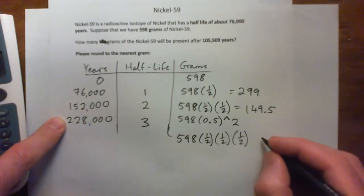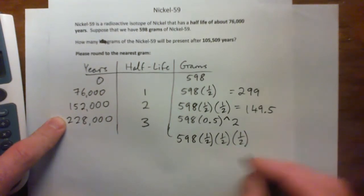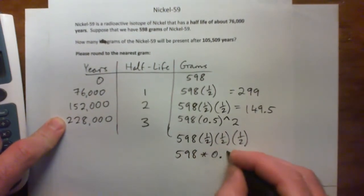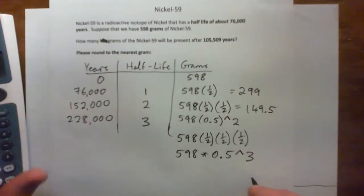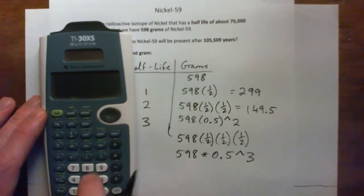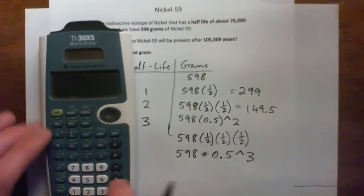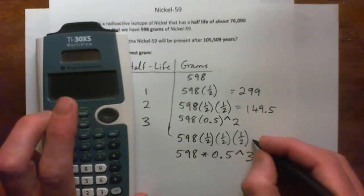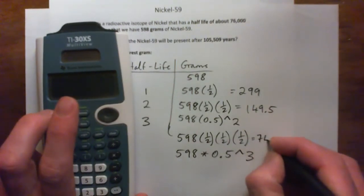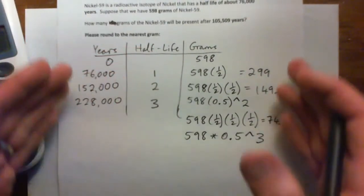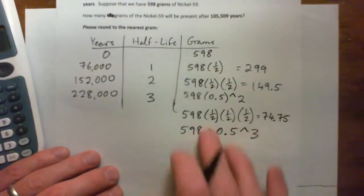So that's 598 times a half cubed, or 598 times 0.5 to the power of 3. So 598 times 0.5 to the power of 3, and that gives 74.75 grams left after that. So we haven't answered the question yet, but I just wanted to run through this so you understand what's going on.